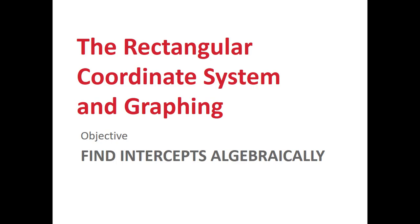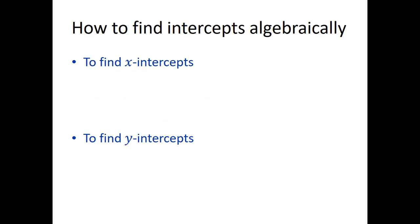The topic of this video is how to find intercepts algebraically. That is, if all we know is the equation of the graph, how can we find the intercepts? Recall that the x-intercepts are points where the graph crosses the x-axis and are of the form (some number, 0). Algebraically, this means that we will let y equal zero and solve for x.